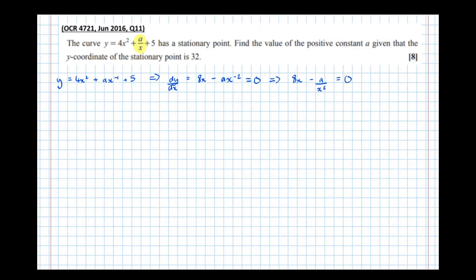So I've noticed at this point that I can times by x² to get rid of the denominator and massively simplify things. So that implies that times everything by x², I get 8x³ - a = 0, which means that a = 8x³.